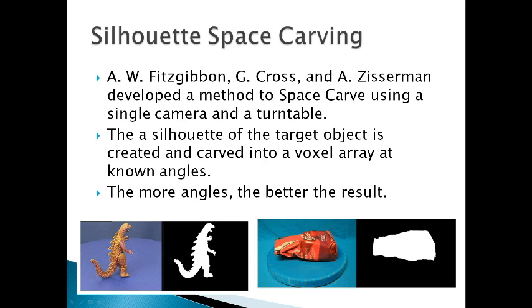So let's talk about some silhouette space carving. This was first developed, this was a method using a turntable, was developed by Fitzgibbon, Gross, and Zisserman. And I used their examples, they looked a lot into using a dinosaur on a turntable, and I decided to adapt that using my own bag of coffee. The silhouette of the target object is created and carved away into a voxel array at known angles. The more angles, the better the result.